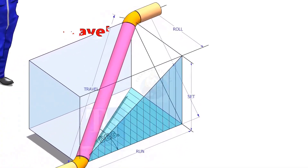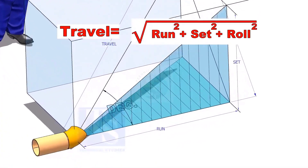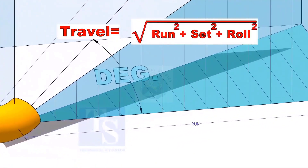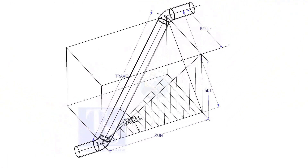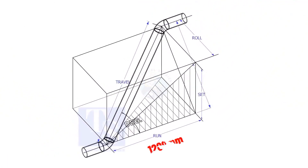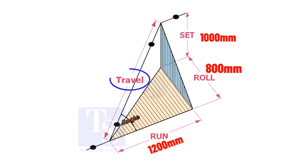The formula to calculate the travel length is the root of the sum of the run, set, and roll. Assume that the run is 1200 mm, the set is 1000 mm, and the roll is 800 mm. Calculate the travel length.